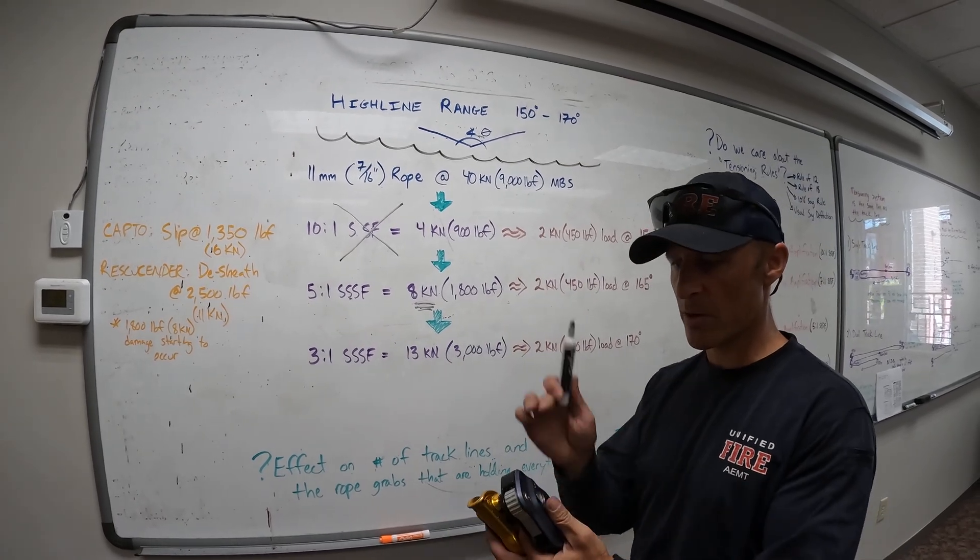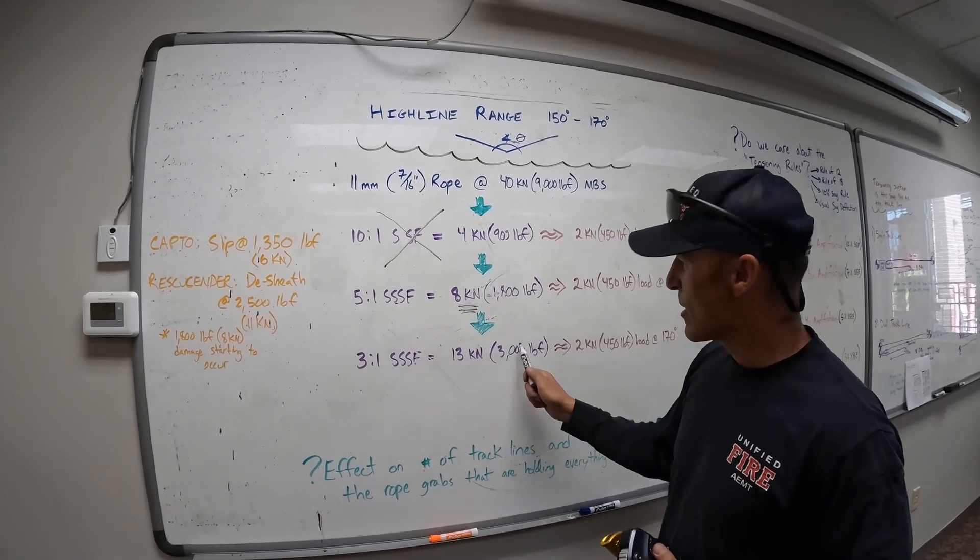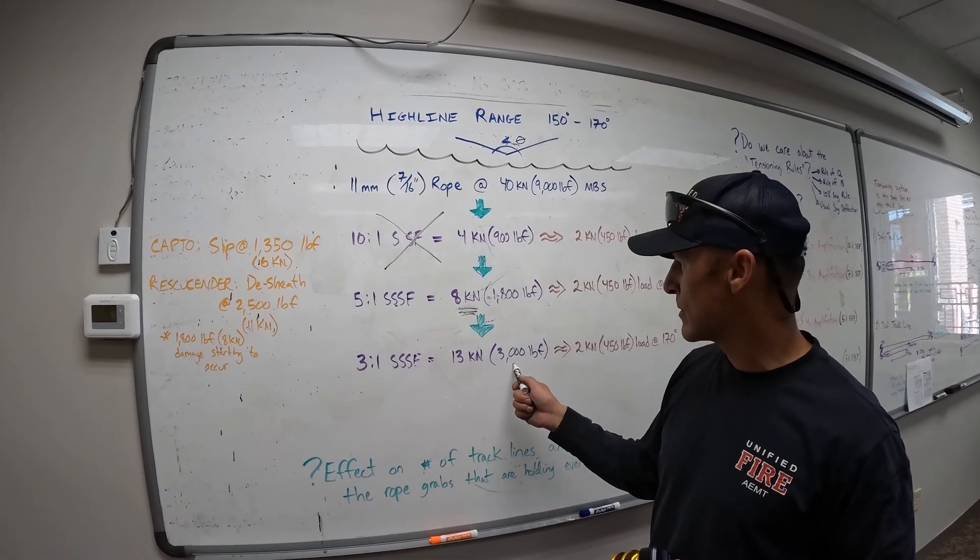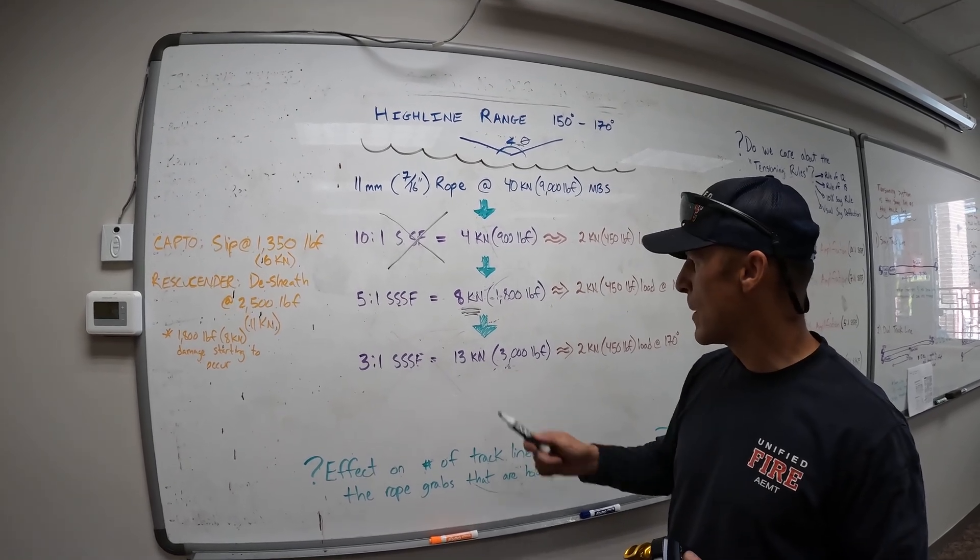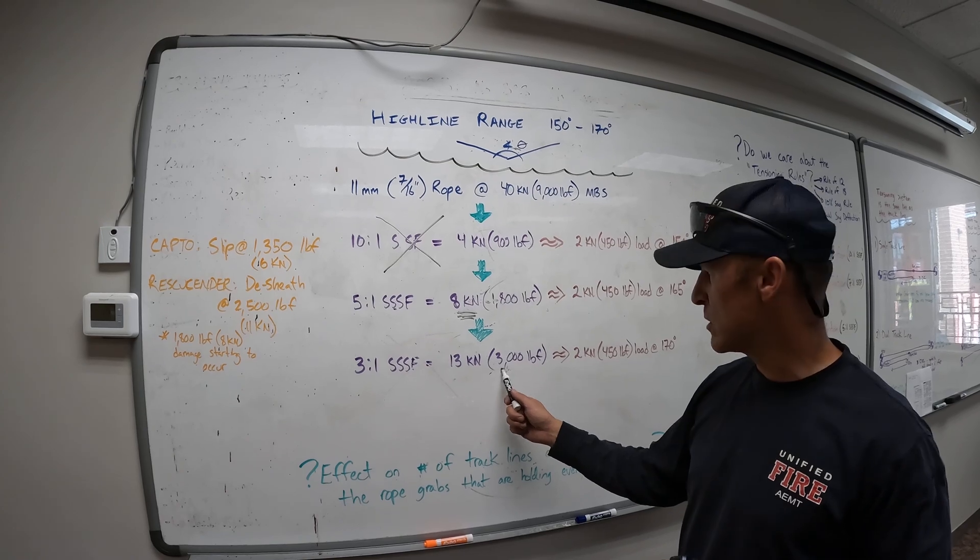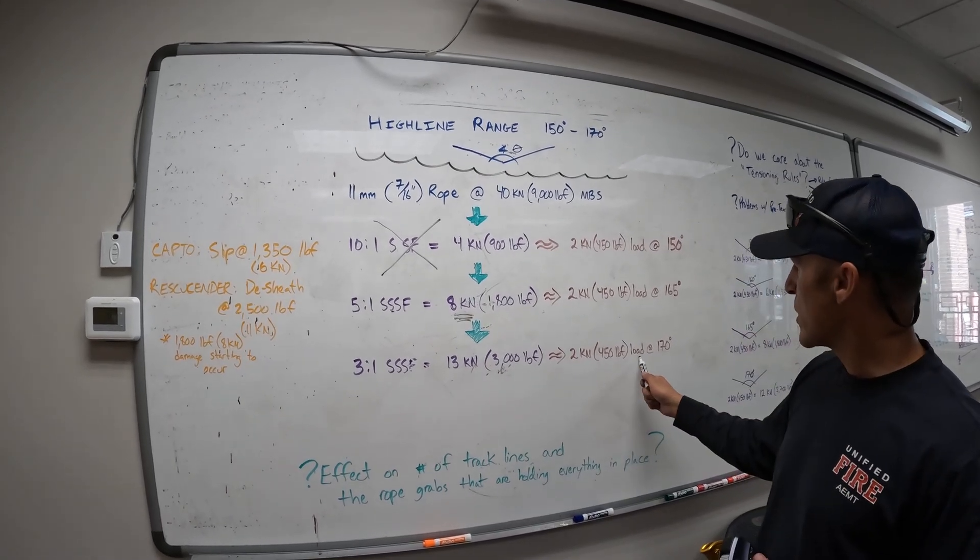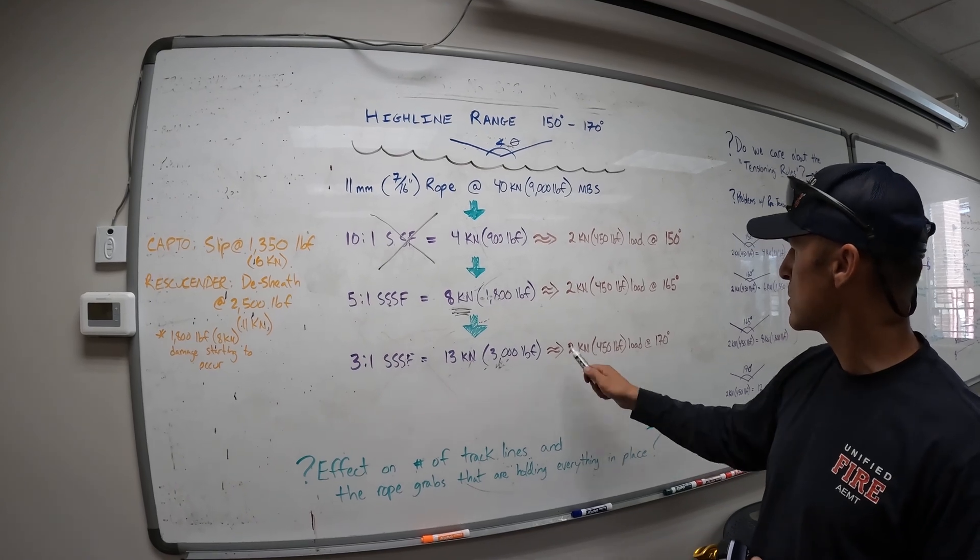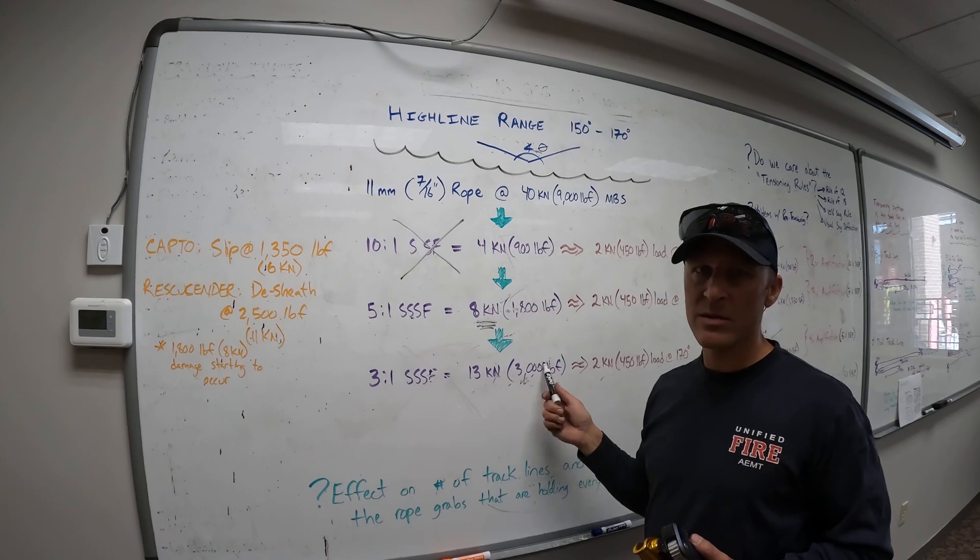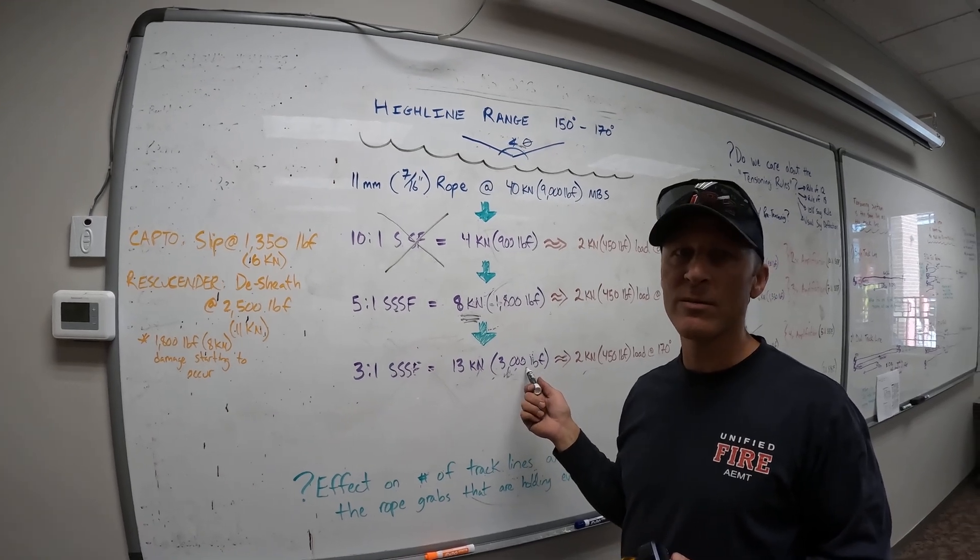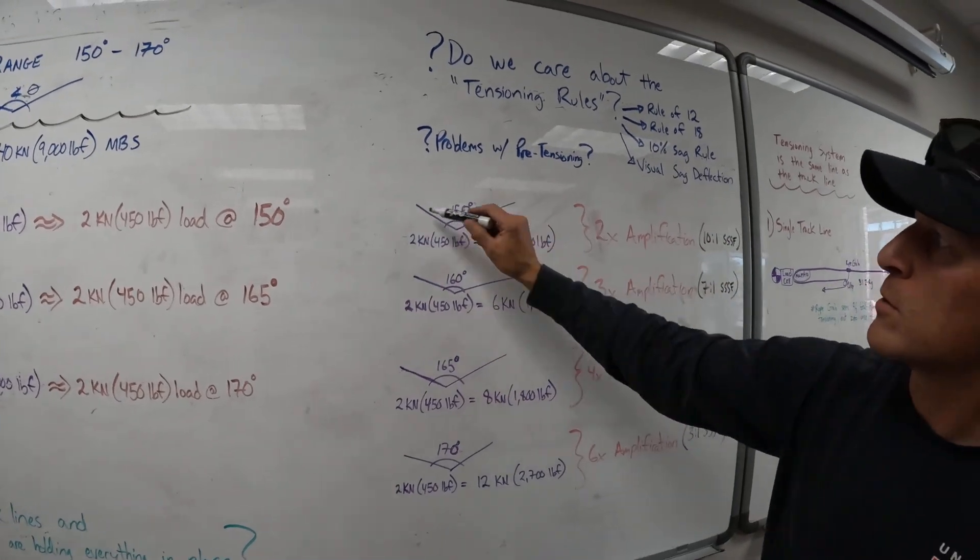We can use a 3 to 1 safety factor. This is where I don't want to be, especially on a single rope, but it's not going to happen anyway. Your rope, maybe a tandem prusik, but you're really pushing the limits here on a 3 to 1 safety factor. That equates to 13 kilonewtons or 3,000 pounds. This would be your same rescue load, two person rescue load at 170 degree catenary angle. If I'm doing that, and we've done this, but we've done it with two ropes.